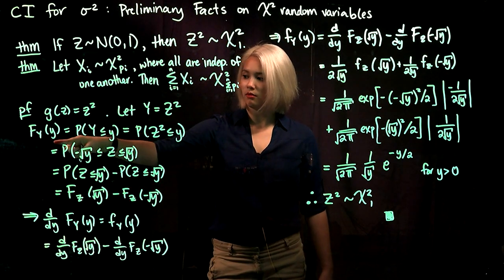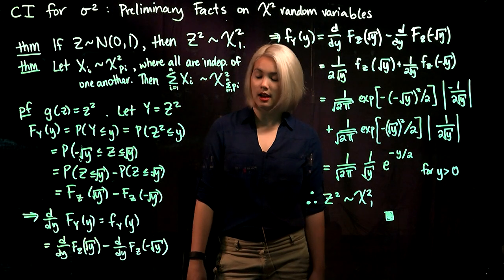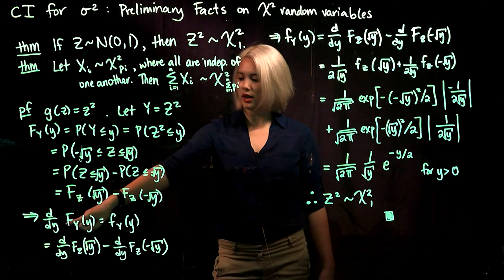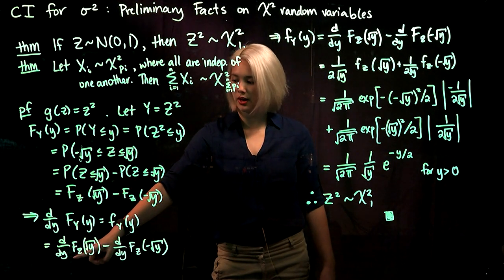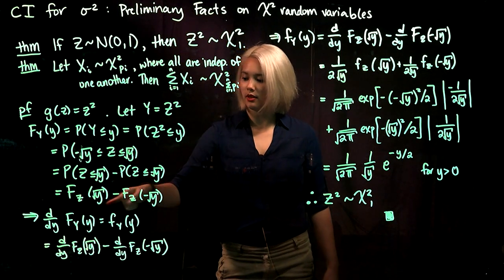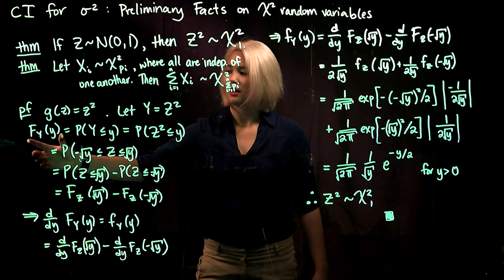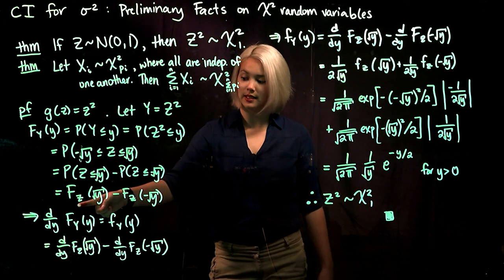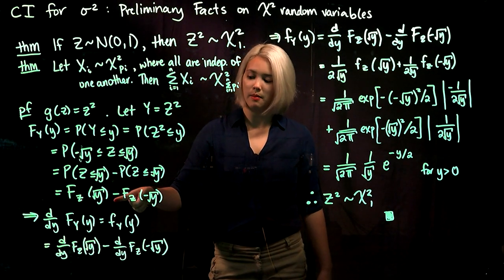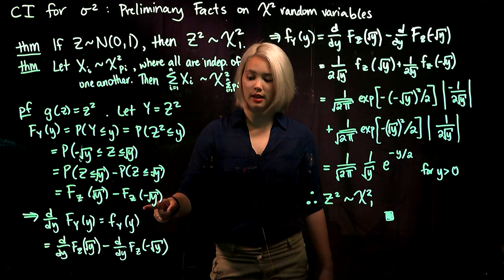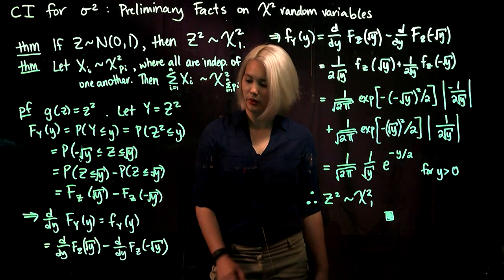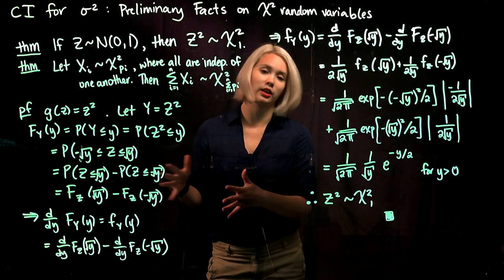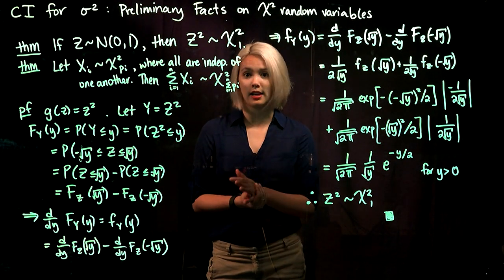Now we have the CDF for Y, and we said we need to take the derivative of it to find the PDF for Y. So the PDF of Y is the derivative of the CDF for Z with square root of y plugged in, minus the derivative of the CDF for Z with negative square root of y plugged in. This is a general form and we need to work with it a bit more to confirm this is a chi-squared random variable.